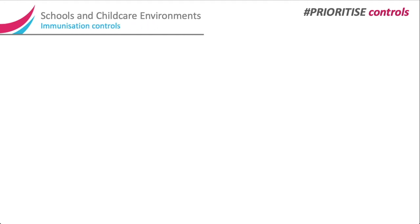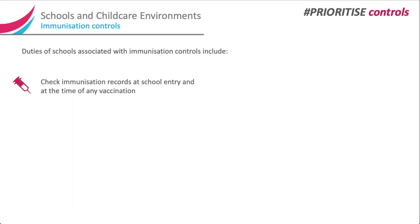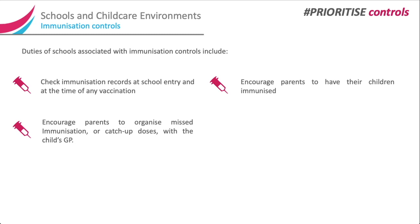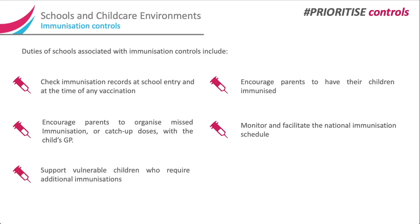Immunisation Controls. Duties of schools associated with immunisation controls include: check immunisation records at school entry and at the time of any vaccination; encourage parents to have their children immunised; encourage parents to organise missed immunisation or catch-up doses with the child's GP; monitor and facilitate the national immunisation schedule; support vulnerable children who require additional immunisations; and ensure that all staff are up to date with their immunisations.